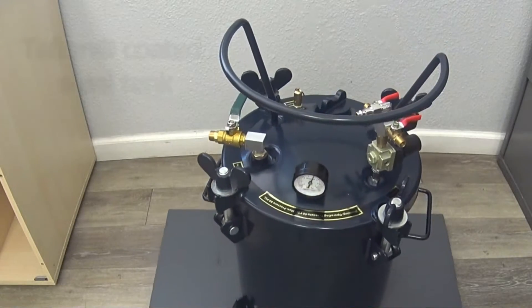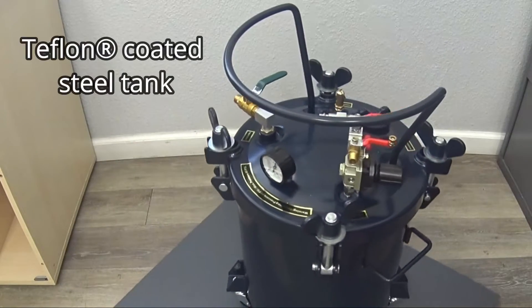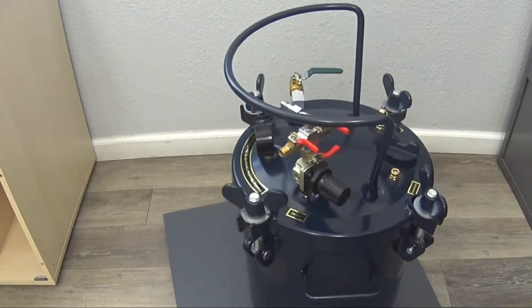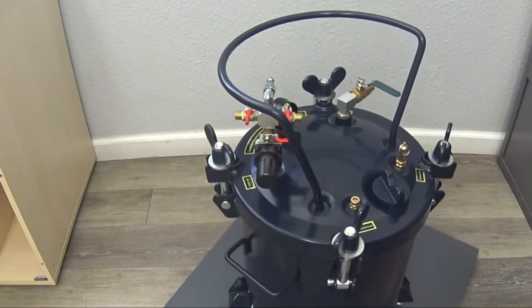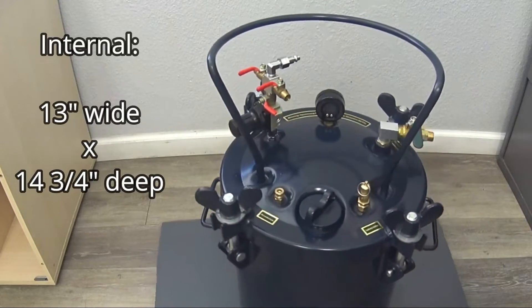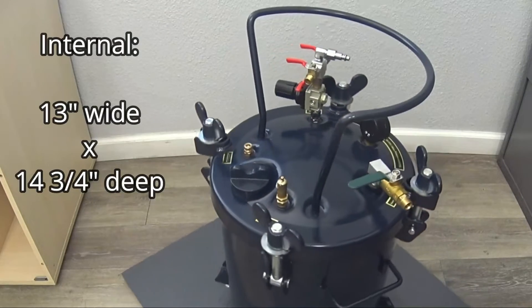The 365C features a Teflon coated steel tank for easy cleanup. The pressure pot has an internal dimension of 13 inches wide by 14 and three-quarter inches deep with the lid attached.